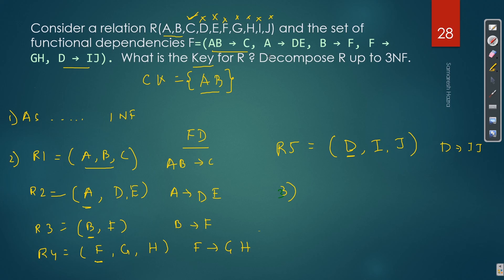Now we check if these 2NF relations are also in 3NF - meaning, are there any transitive dependencies within them? In each sub-relation: A, B, C - B and C are not transitive. A, D, E - D derives I, J but D is in a separate relation. In R3(F, G, H): F derives G, and F derives H - no transitive chain. In R4(D, I, J): D derives I and J directly.